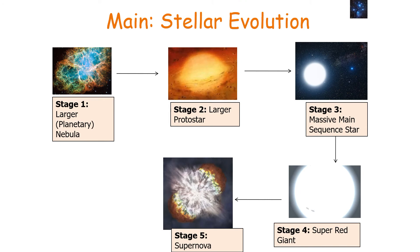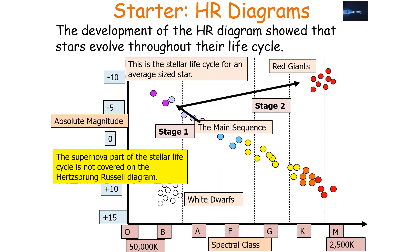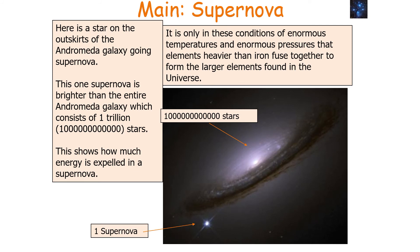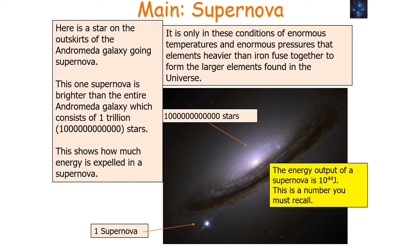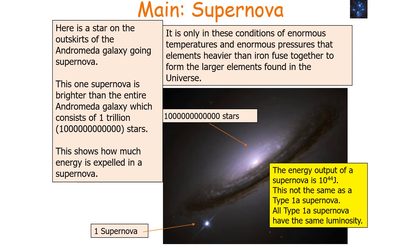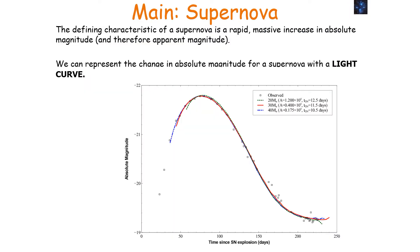So we go from larger nebula to larger protostar, to massive main sequence star, to super red giant, to supernova. The supernova part of the stellar life cycle is not covered on the Hertzsprung-Russell diagram. The shockwave and extremely high temperatures and pressures allow a brief period during which elements heavier than iron are produced — we believe the supernova is the only place in the universe where elements larger than iron form. When a star undergoes a supernova, it experiences a brief and rapid increase in absolute magnitude. The energy output of a supernova is 10⁴⁴ joules — a number you must recall. This type of supernova is called a type 2 supernova.